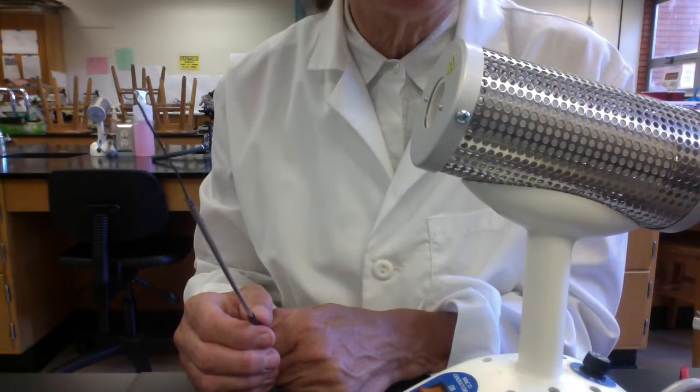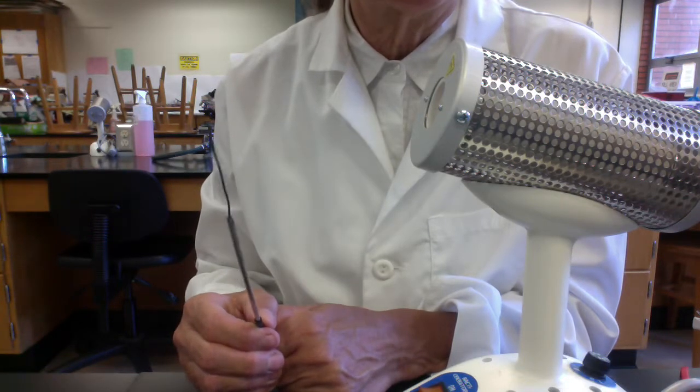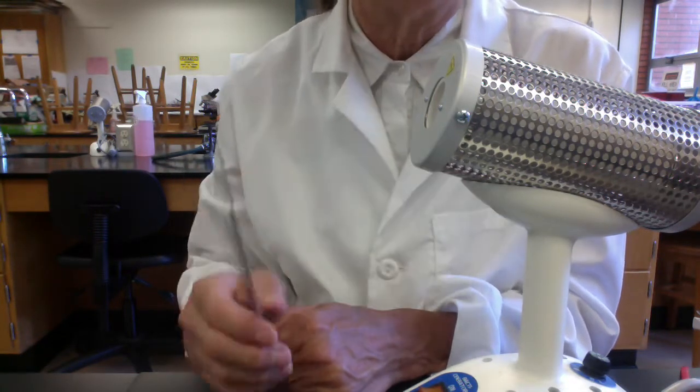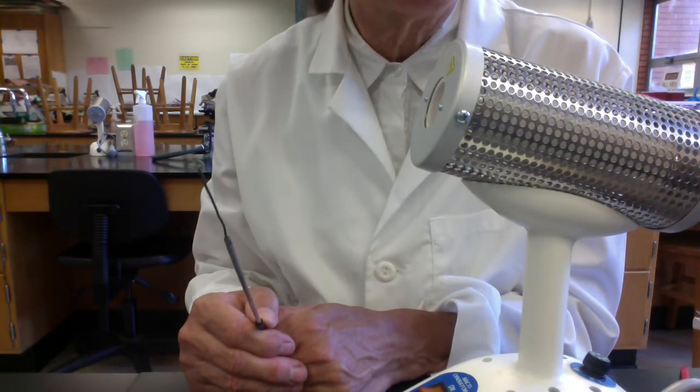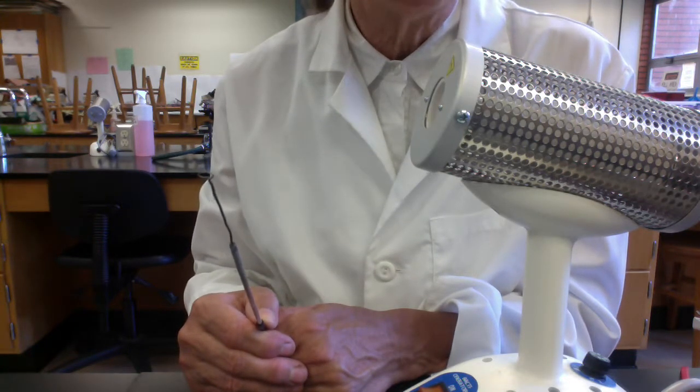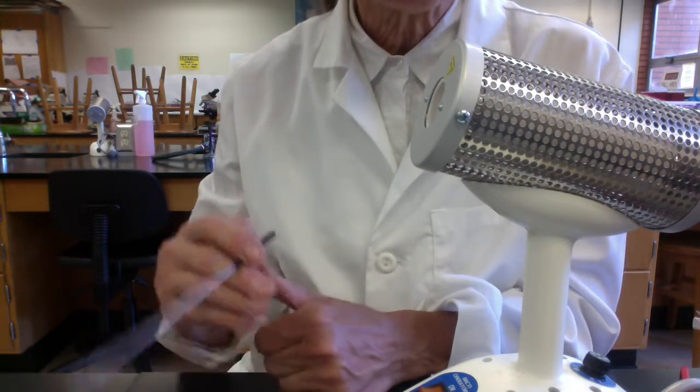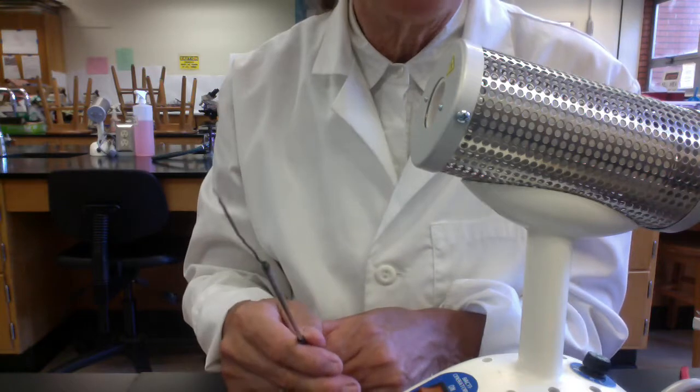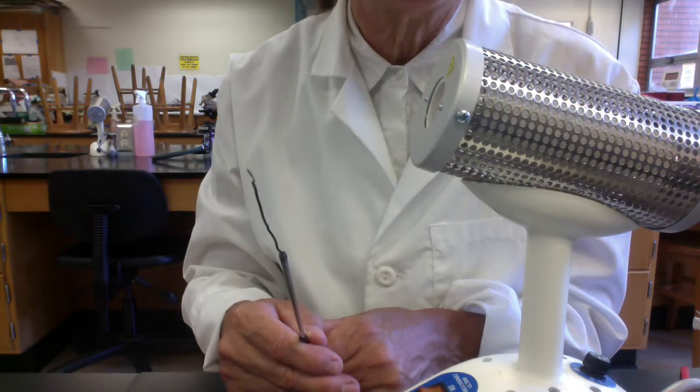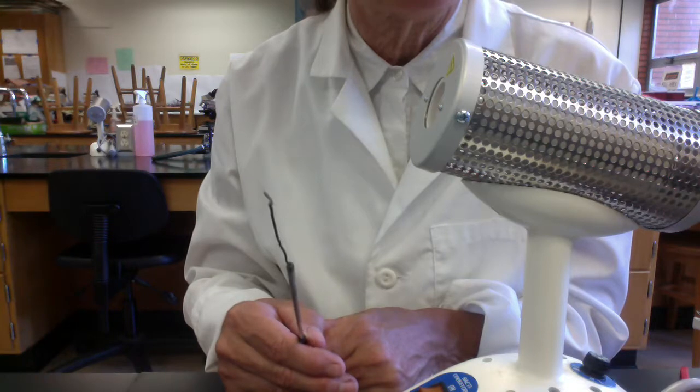Do remember even after turning off the Bacti incinerator, the barrel remains hot for a long period of time. So again, try to make sure that you don't touch it. Also make sure after sterilizing your loop, don't lay the loop on paper. We had a fire start when a hot loop was placed on a paper towel. It actually started a fire.